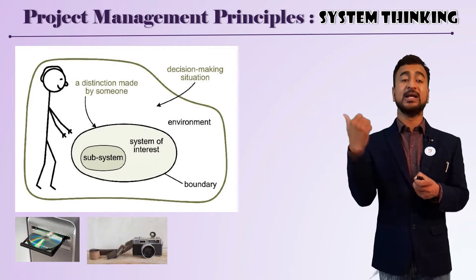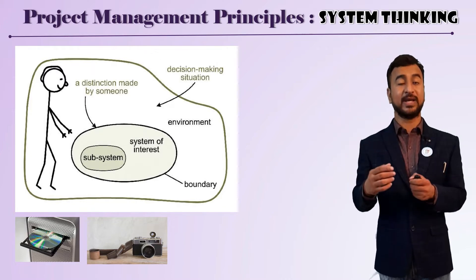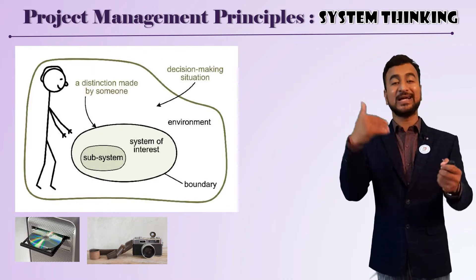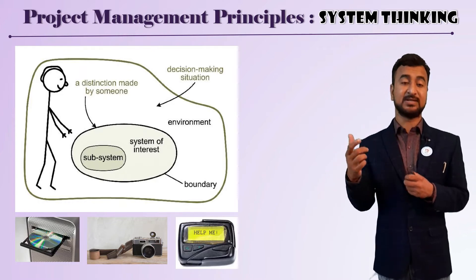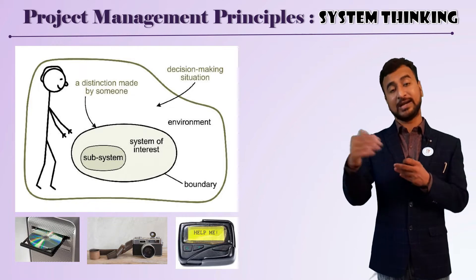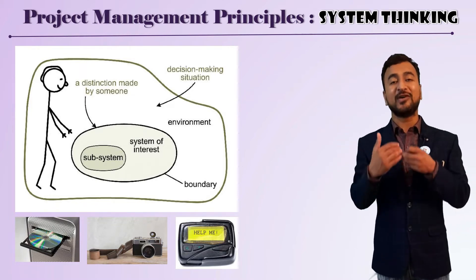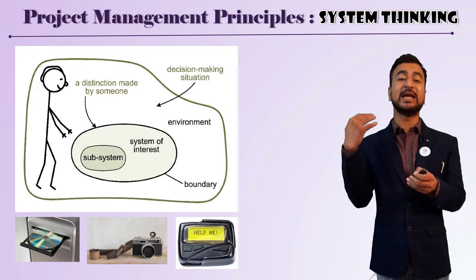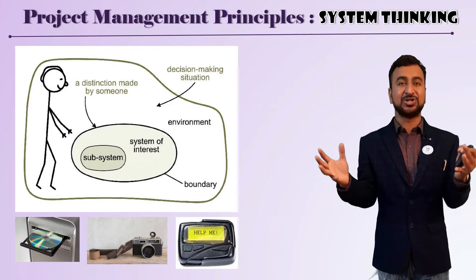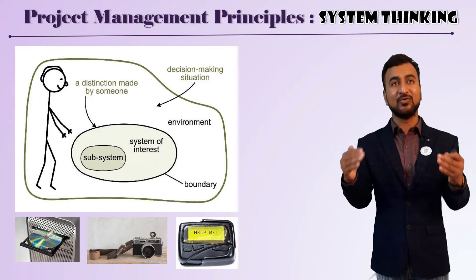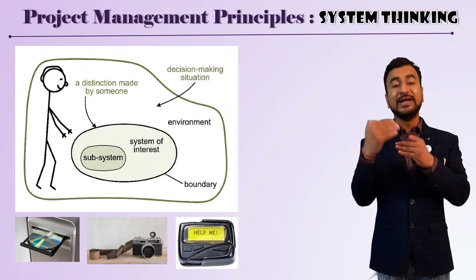A good example is digital cameras — companies that did not innovate in that domain perished. Similarly, pagers became obsolete once everyone had a cell phone, and tomorrow new things will come. You have to keep yourself updated by interacting with the ecosystem and understanding the holistic picture — how things are interlinked and interact with each other.